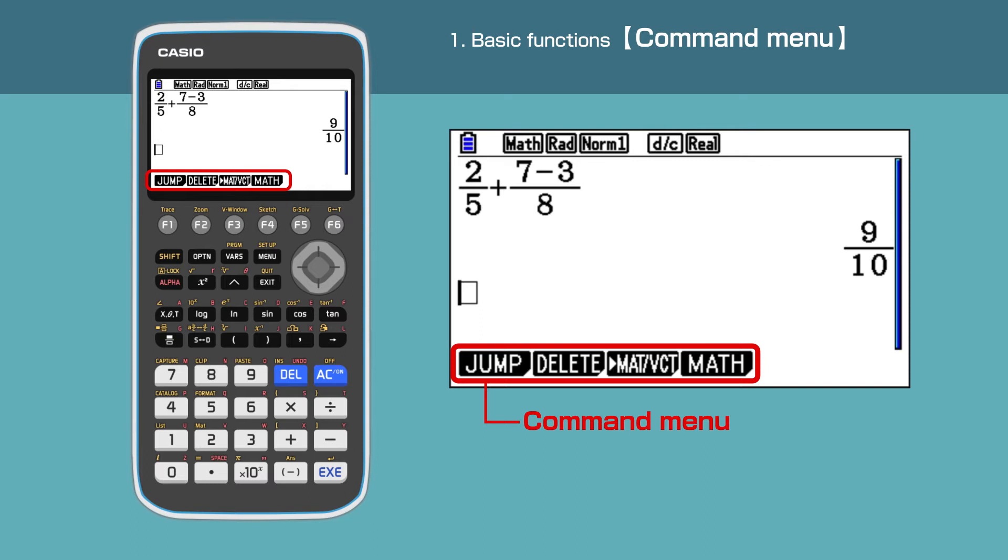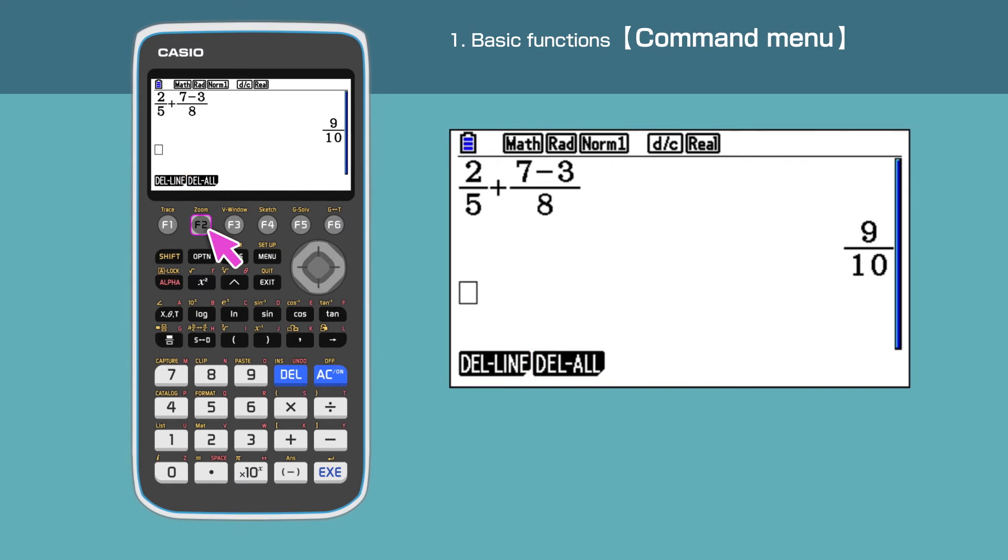For example, if you want to delete your work, press F2 under the delete command. There are two options. To clear all previous calculations, press F2 to delete all, then press F1 to confirm.